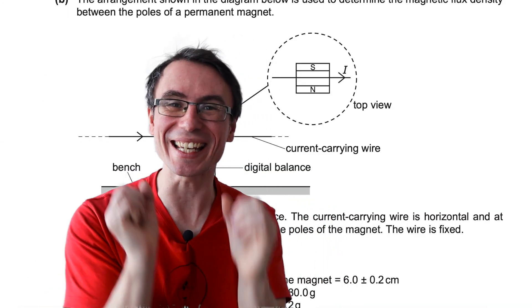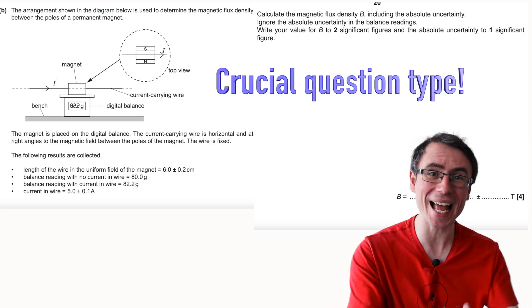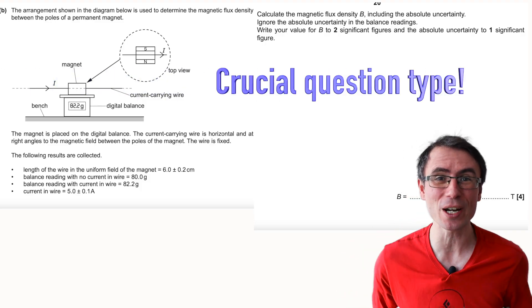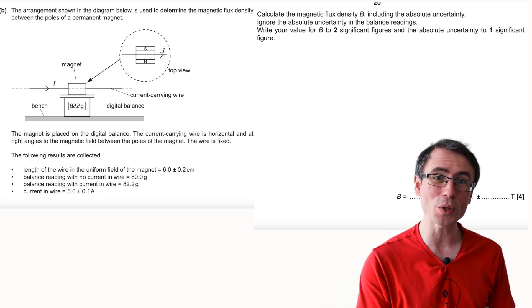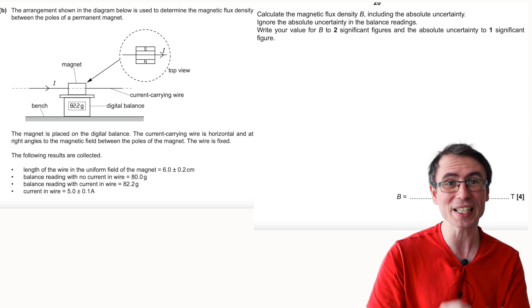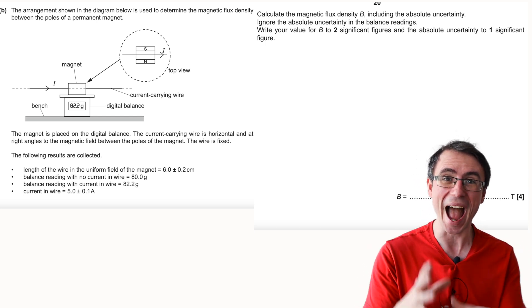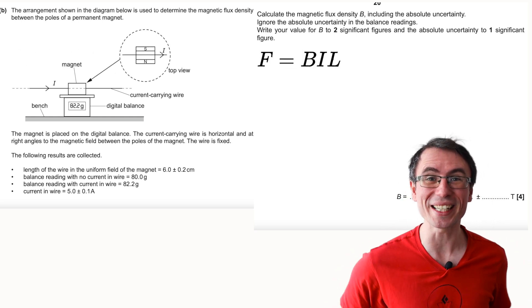The next part of this question is equally interesting and valuable to learn from. We have results from an absolute classic experiment on magnetic field, and we're given all of this valuable data. What we need to do is use this to determine the magnetic flux density B and the absolute uncertainty in that value.